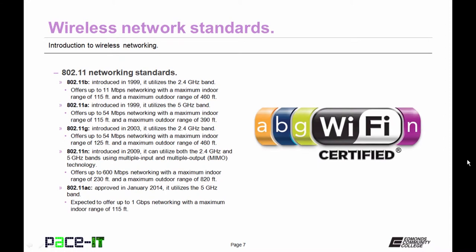Now let's move into more detail on the 802.11 standards. First up is 802.11b. It was introduced in 1999 and it utilizes the 2.4 GHz band. It offers up to 11 megabits per second networking with a maximum indoor range of 115 feet and a maximum outdoor range of 460 feet.